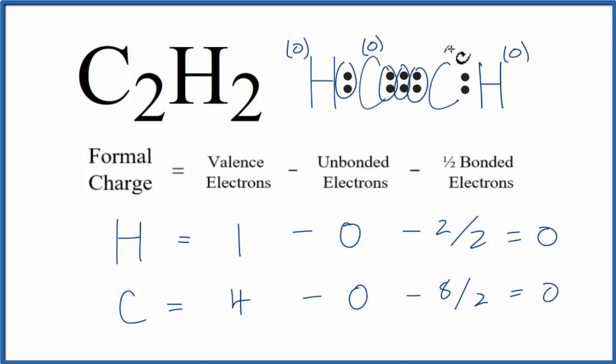And then this is the same thing. It's zero as well. So all of the formal charges are zero, so that means this is the more stable or more favorable Lewis structure for C2H2. This is Dr. B, and thanks for watching.